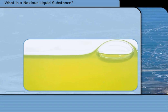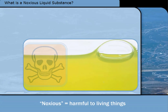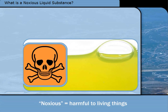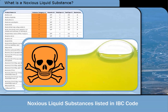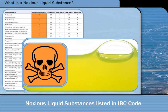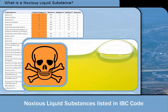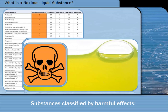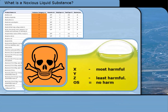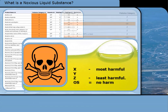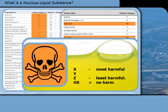So what is meant by a noxious liquid substance? Noxious means physically harmful to living beings. Annex 2 defines a noxious liquid substance as any substance listed as pollution category X, Y, or Z in the International Bulk Chemical Code. Substances are classified by United Nations experts according to their harmful effects. Category X substances are the most harmful, with category Z the least harmful. Substances categorised as OS have been considered and not found to be harmful.